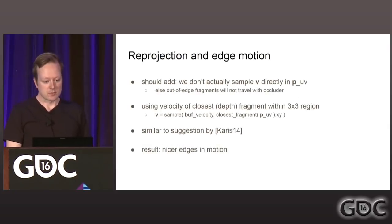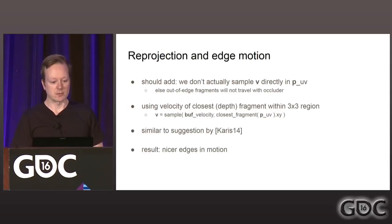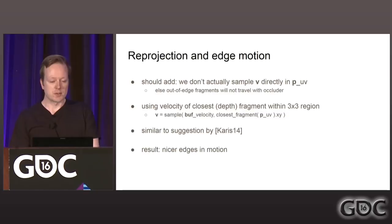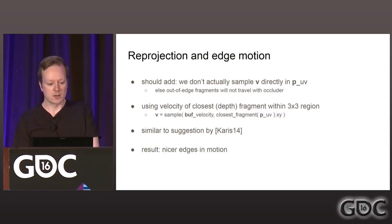We don't actually sample the velocity directly at the current fragment, because fragments on edges of objects won't travel with the occluders. Instead, we use the velocity of the closest depth-wise sample within our three-by-three region — similar to a suggestion by Karis. The result is nicer edges in motion.